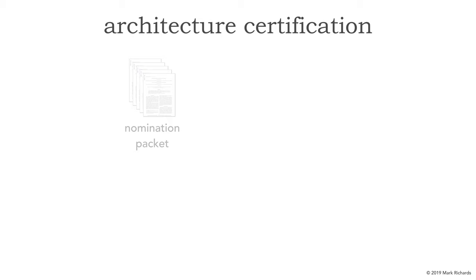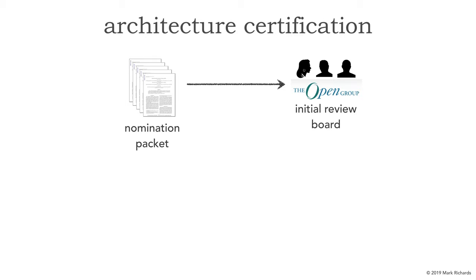Here's the process. First, you download and fill out the nomination packet — it can't be more than 50 pages long, which was my biggest challenge when I filled out both mine for the regular and master IT architect certifications. You submit it to the Open Group and they do an initial review board. They check whether you have the required profiles and whether anything is missing. If things are missing — like give-back or mentoring — they'll reject it with a written statement explaining why.